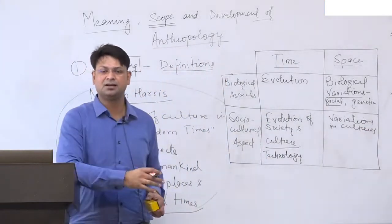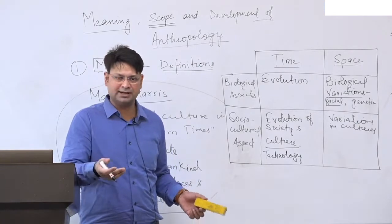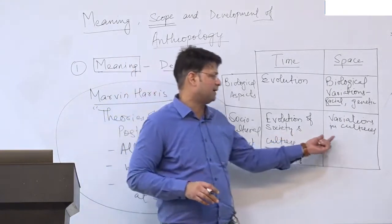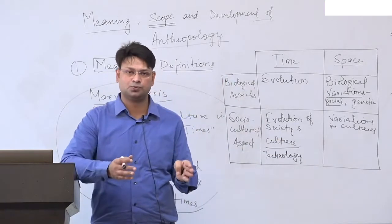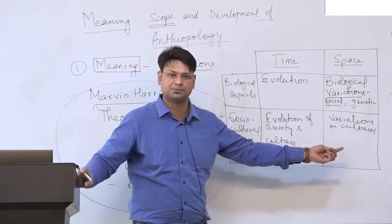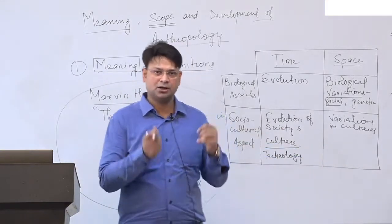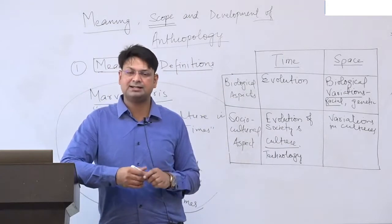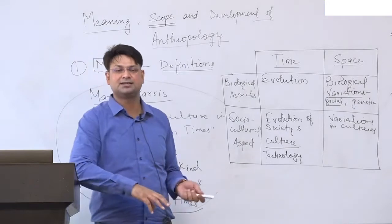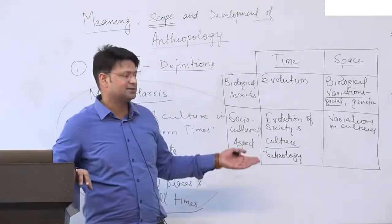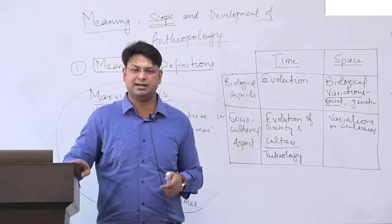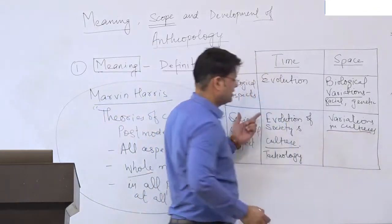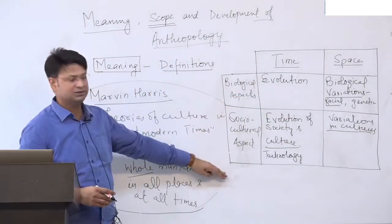Cultural variations across space include differences in technology, worldview, and social institutions. For example, polytheism in Hindu societies versus monotheism in Europe; polygamy allowed in some places while monogamy prevails in others; joint families in some societies and nuclear families in others. All these variations in culture make anthropology's scope wide and meaningful.